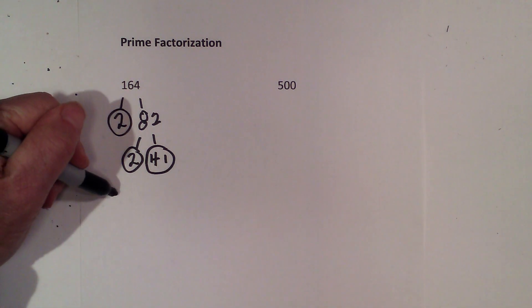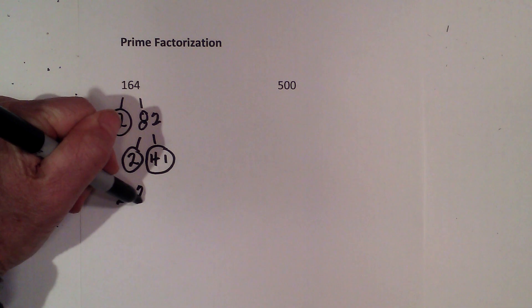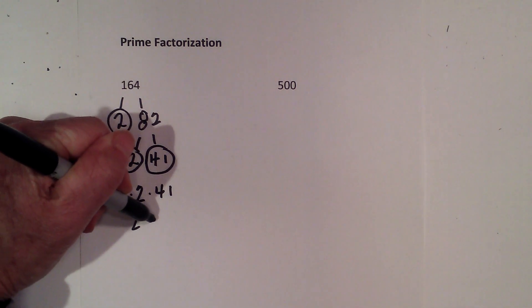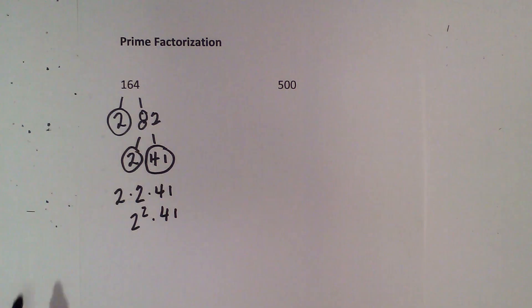So the prime factorization of 164 is 2 times 2 times 41, or 2 squared times 41. Now let's look at 500.